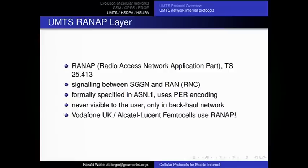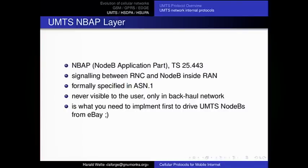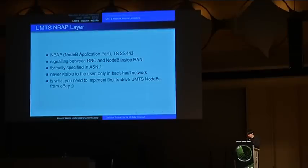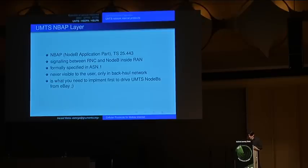RANAP between the RNC and SGSN is specified in ASN1 with PER encoding. Notably, Vodafone UK and Alcatel-Lucent femtocells also use RANAP to the femtocell. There's also NBAP — the Node-B application part — between the RNC and Node-B, again specified in ASN1. Some Node-Bs can be bought on eBay now — it's surprising but not horribly expensive, sometimes around 1,500 euros — capable of serving about 240 concurrent voice calls. They often come from Singapore, Russia, or the United States.